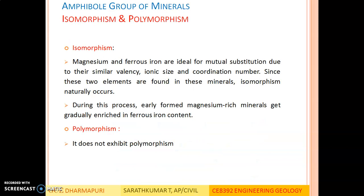Regarding isomorphism: since magnesium and iron ions both exist in amphibole group minerals, both have similar valency, ionic size, and coordination number and are interchangeable. So isomorphism does exist between these two radicals.